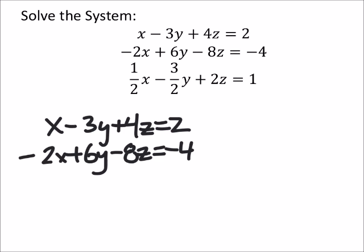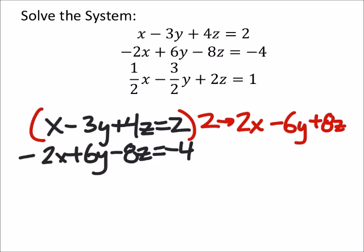X. So if I was eliminating x, I would only multiply this top equation by 2 so that the coefficients of x are opposites. So I now have this is going to give me 2x minus 6y plus 8z equals 4 and the second equation didn't change.